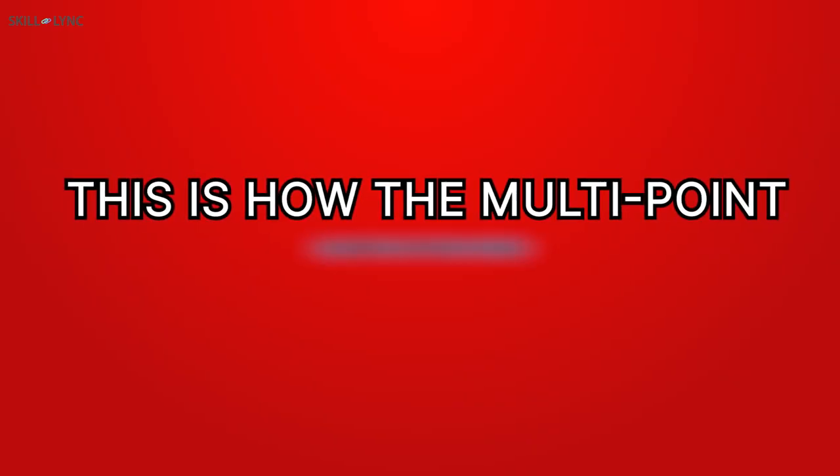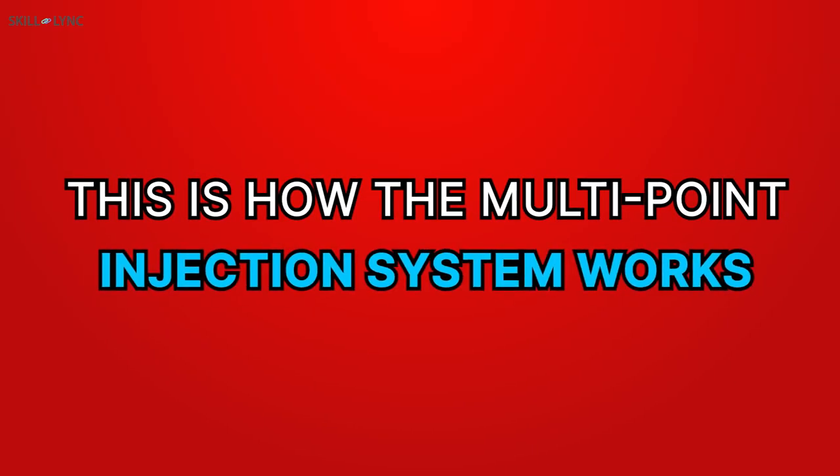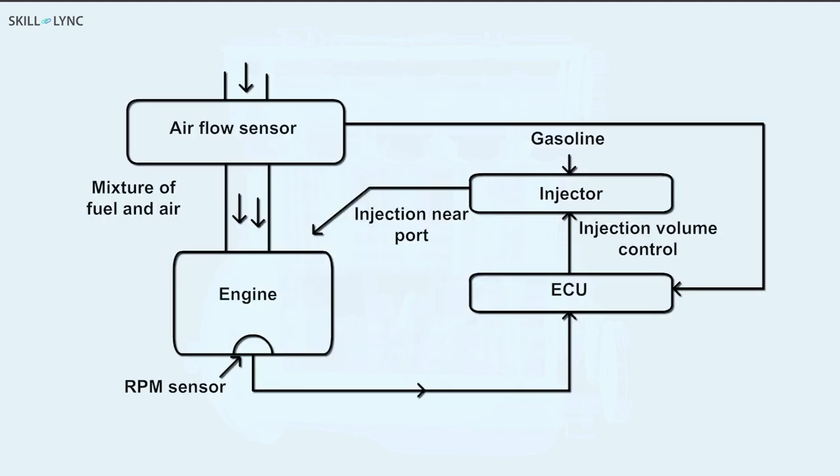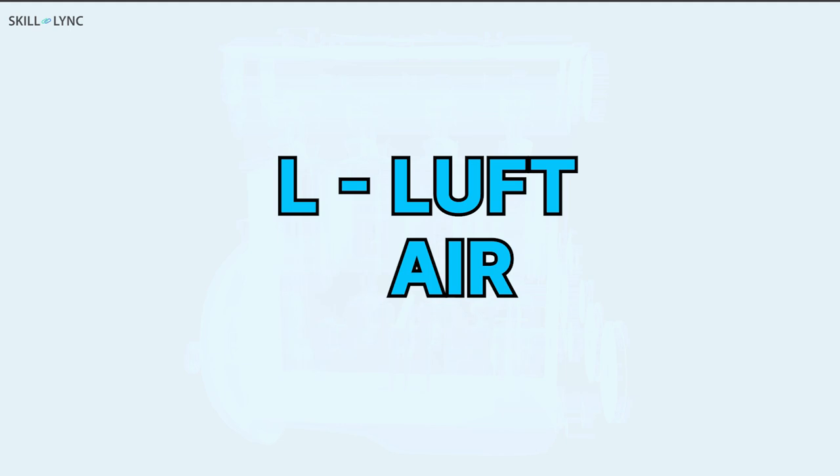This is how the multi-point injection system works. If the MPFI controls the fuel injection by taking manifold pressure, engine speed and air density as main signals, then it is said to be a DMPFI system. D stands for Druck which refers to pressure in German. If the main input signals to the ECU are the airflow rate and the engine speed, then that system is said to be an LMPFI system. L stands for Luft which refers to air in German.